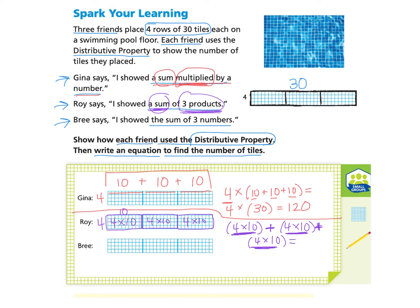If you'd like to pause and try to solve this on your own and come back, you may do so. Otherwise you can follow along. 4 times 10 makes 40, 4 times 10 makes 40, and 4 times 10 makes 40. When we add 40 plus 40 plus 40 we find the answer of 120.